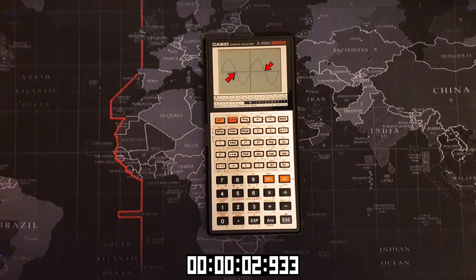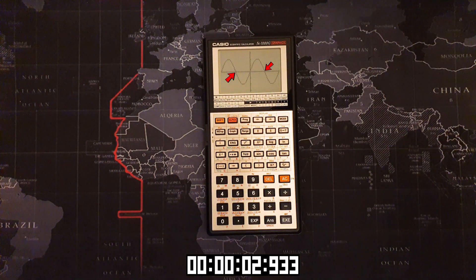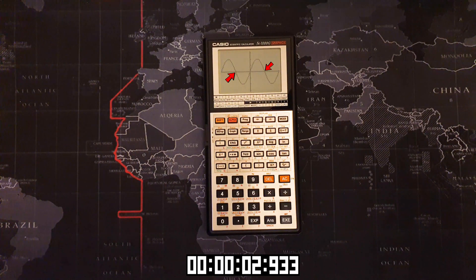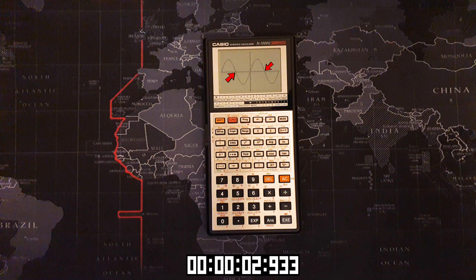There we have it, 2.933 seconds, which is 1.16 seconds faster than the Sharp for one period of a sine graph.